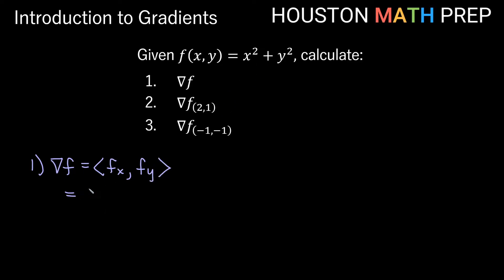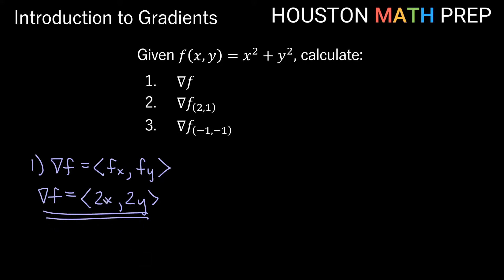Taking the partial derivative with respect to x of x² gives 2x, and y² is treated as a constant so its derivative is 0. For the partial with respect to y, x² is now a constant giving 0, and the derivative of y² is 2y. So our del f — our general gradient — is the vector function (2x, 2y).